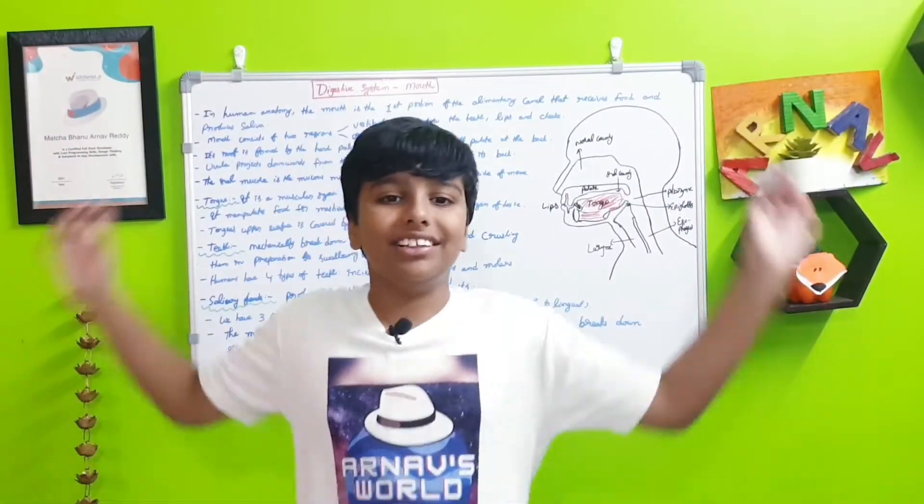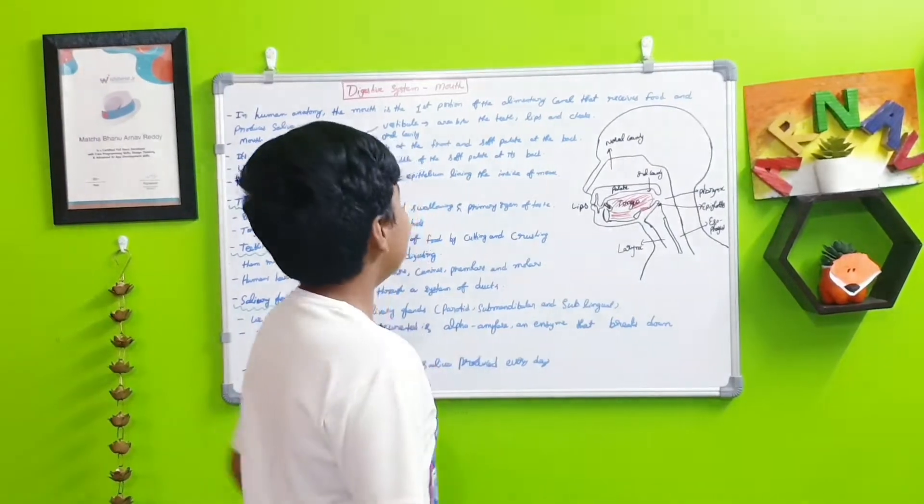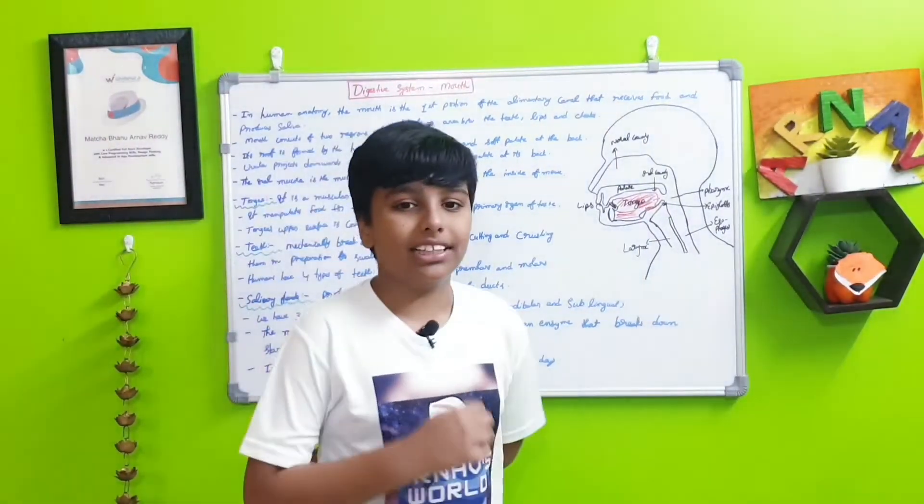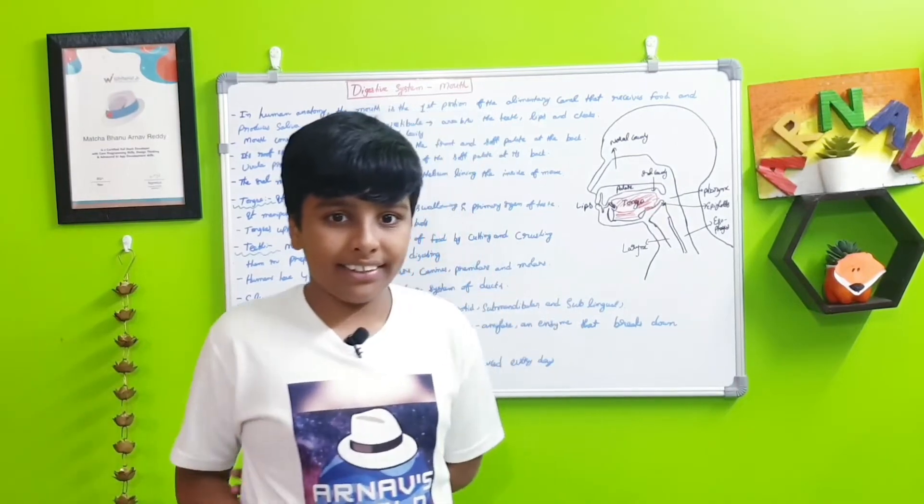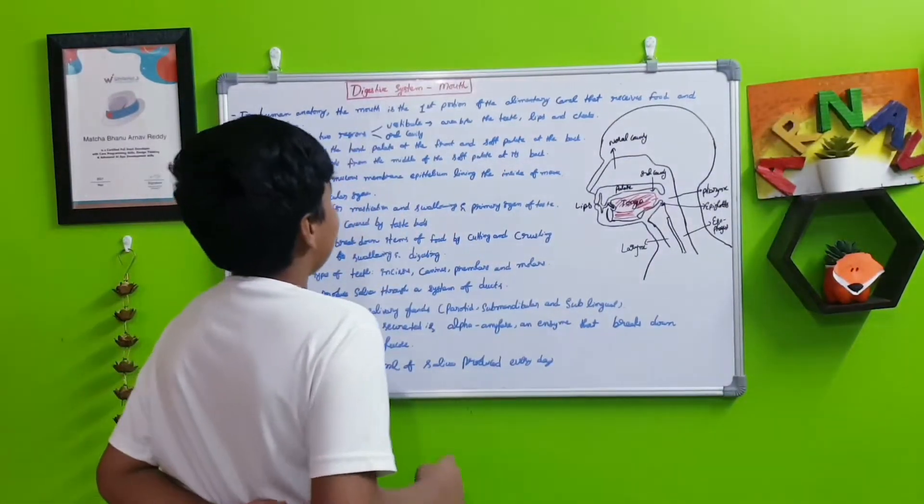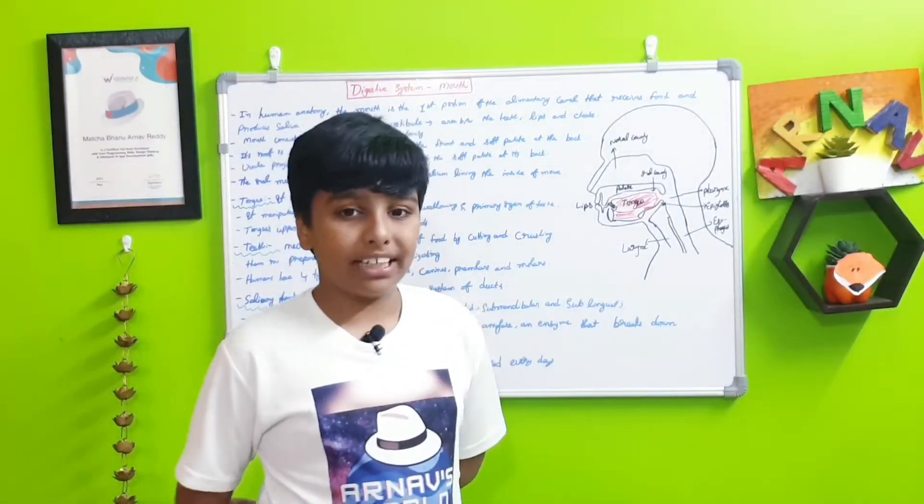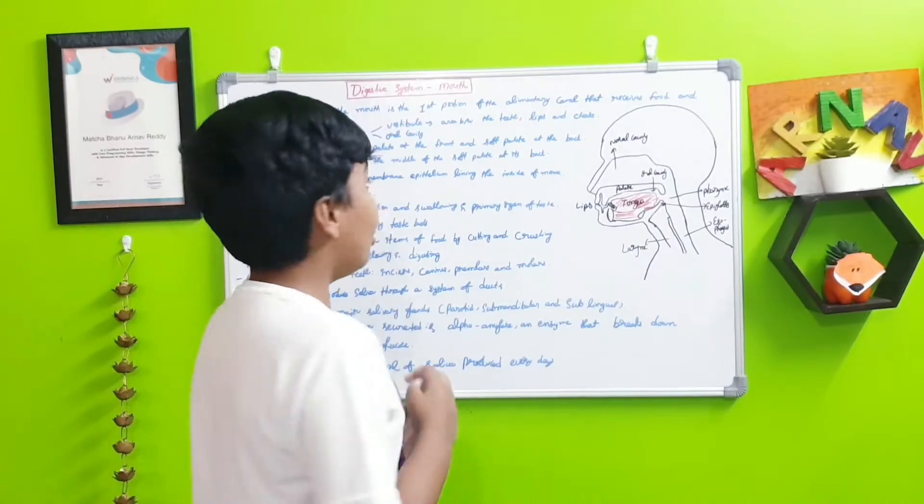Hi friends, welcome to Arnav's World. Today is the 35th episode in the biology series. In the last episode we discussed about the digestive system. In the digestive system there are four main parts of digestion, so today we're going to discuss about the first part of digestion: what happens in the mouth and what is inside the mouth.